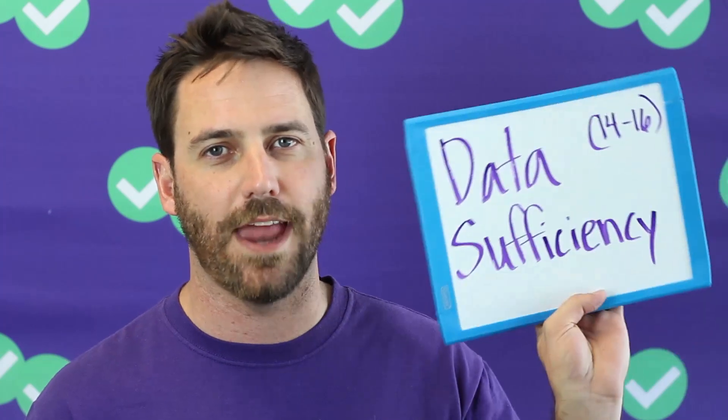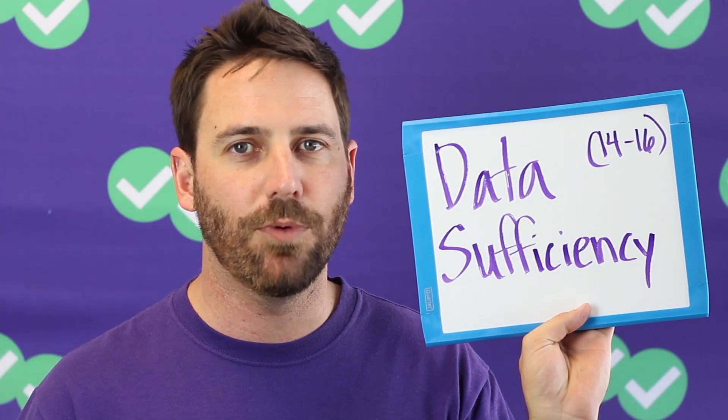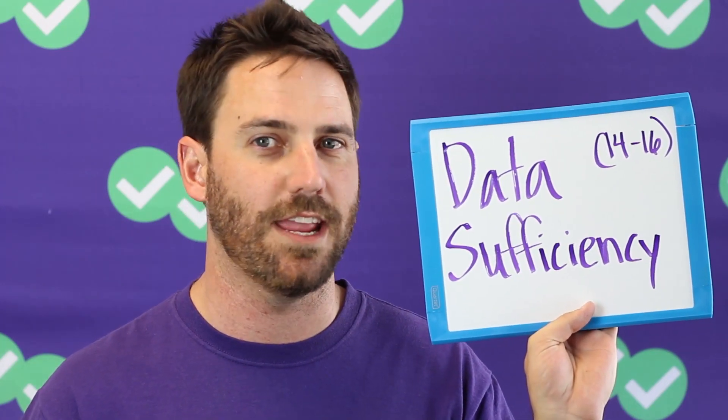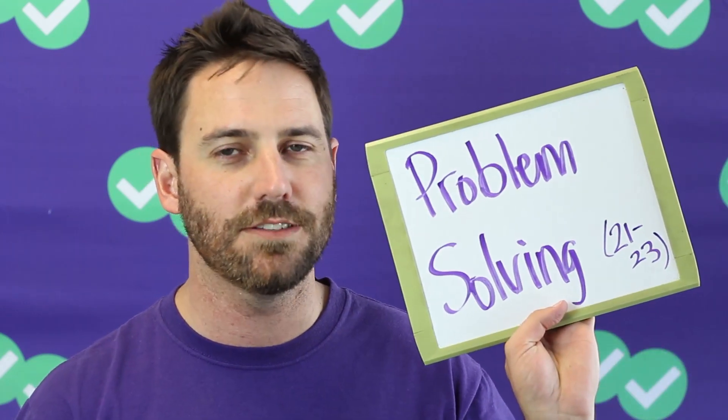Within the quant section, you're going to see two different question types. One that's super unique to the GMAT is the data sufficiency questions. These are very particular to the GMAT and really require some preparation — you can't just dive in. You really need to know what the answer choices are saying and understand how to approach these problems in a very specific way. You'll have somewhere between 14 to 16 of those questions. You'll also have problem solving questions, 21 to 23 of these, which tend to be more traditional math questions where you have five possible answer choices and you're solving math problems.